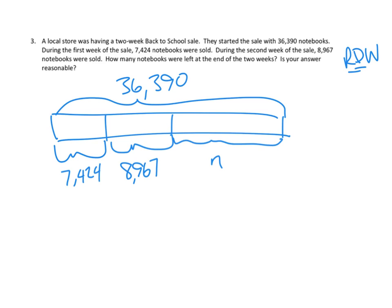We could approach this in a couple of different ways. One is we could take the whole, subtract one of the parts, and that would give us the remaining section, then take that as a new whole and subtract another part. The other way is we could add up what they sold in these two weeks and then subtract it from the whole. I think that's the way I'm going to do it, because I'd like to mix in a little addition, which I find a little easier with my subtraction.